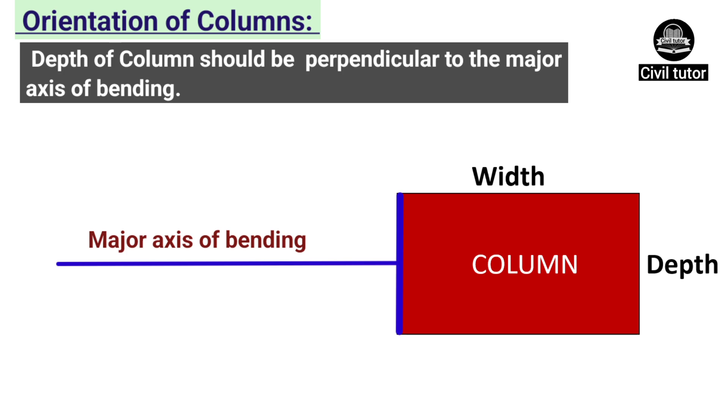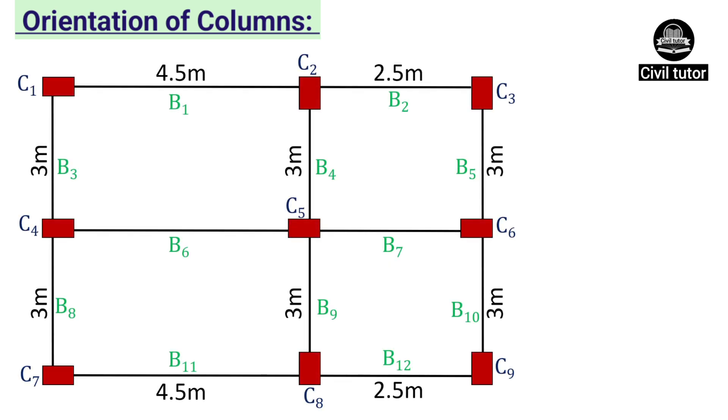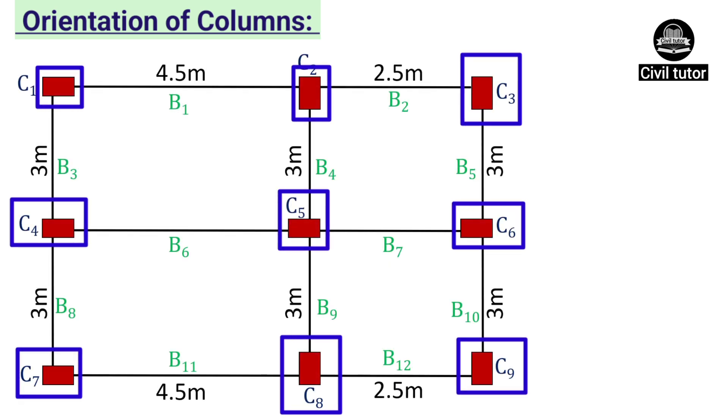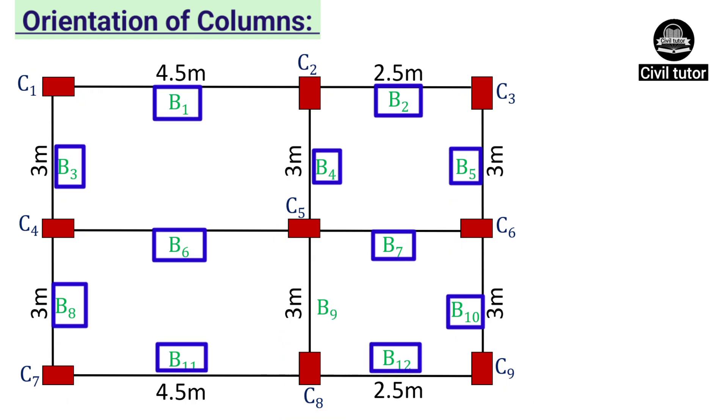To make it easy for you, let's consider a beam column system with 9 columns numbered from C1 to C9, connected by 12 beams numbered from B1 to B12. The width of each beam is 230 mm, and the size of each column is 230 mm x 300 mm.